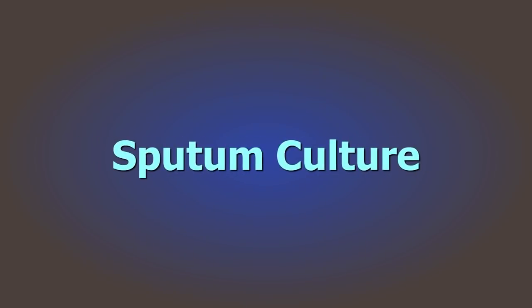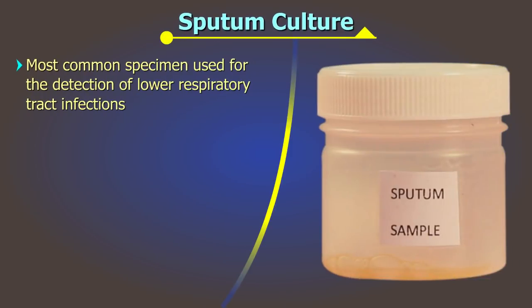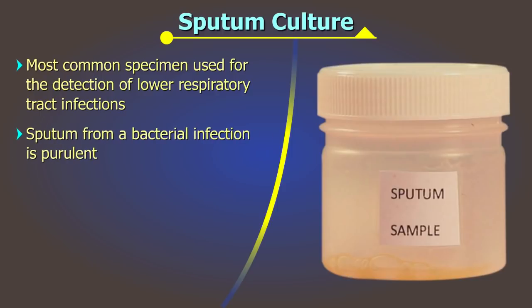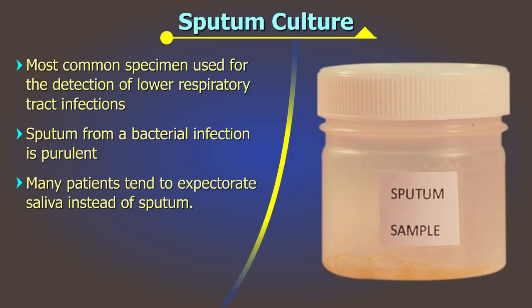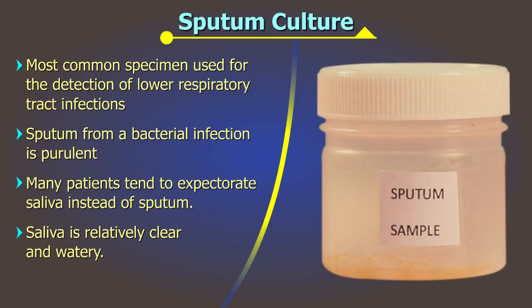Sputum Culture. The most common specimen used for the detection of lower respiratory tract infections is sputum. Sputum from a bacterial infection is purulent — that is, consisting of pus — and contains yellow or green opaque material as well as clear mucoid secretions. Many patients tend to expectorate saliva instead of sputum. Saliva is relatively clear and watery. The laboratory staff should be able to distinguish between a true sputum sample and saliva. Saliva samples should be rejected as culture results of saliva are very misleading.